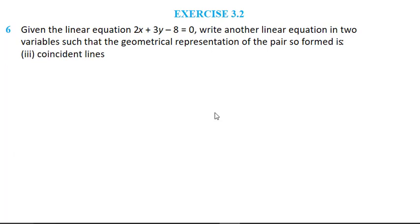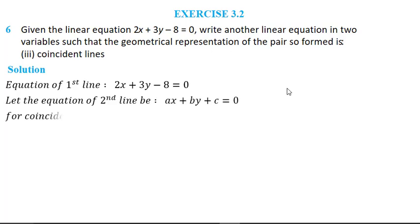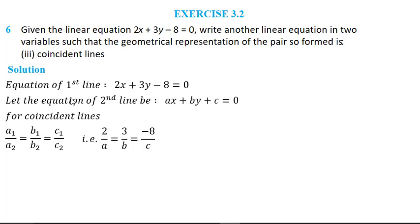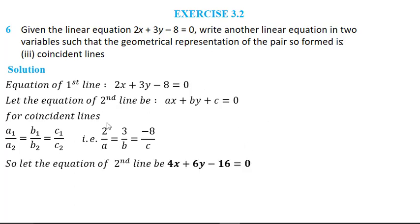For coincident lines, a1/a2 = b1/b2 = c1/c2, meaning 2/a = 3/b = −8/c. Taking a = 4 gives ratio 1/2, so b = 6. Then −8/c = 1/2 gives c = −16. Therefore the equation 4x + 6y − 16 = 0 is coincident with 2x + 3y − 8 = 0.